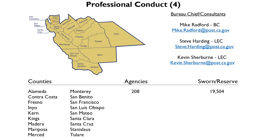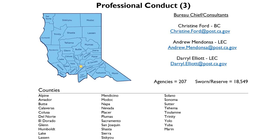Continuing going north, this is the central area up to the Bay Area with many more counties listed, 208 agencies, and a sworn and reserve population of 19,504. And finally, professional conduct bureau three, district three, covers many more counties with 207 agencies and a sworn and reserve population of 18,549. Bureau chiefs, consultants, and their emails are listed. Please reach out to them as we proceed with any questions regarding SB2.